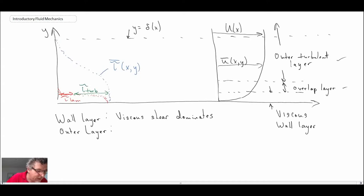We have the outer layer, and that would be where the turbulent shear dominates. And then we have the overlap region or overlap layer, and that's where both of them are important. So both laminar and turbulent shear is important.